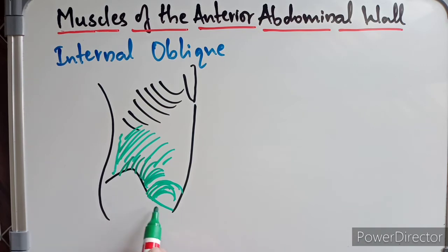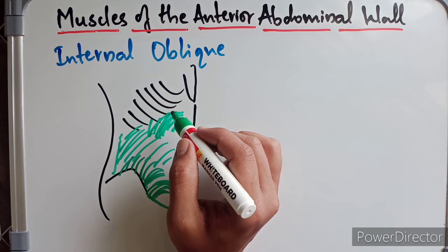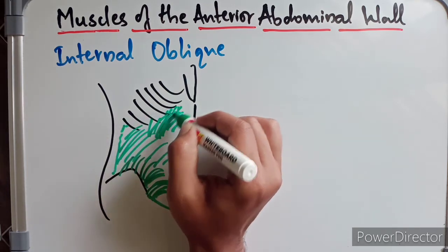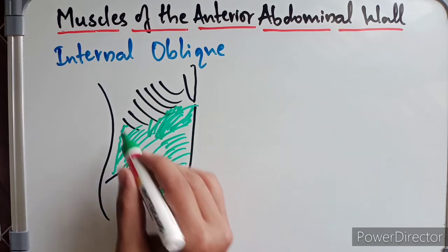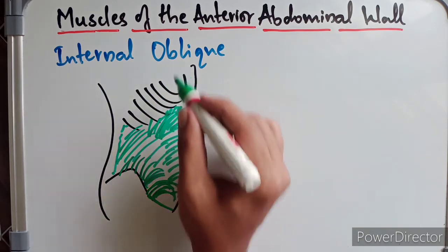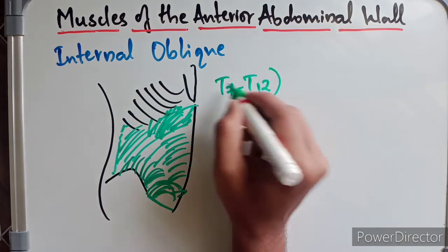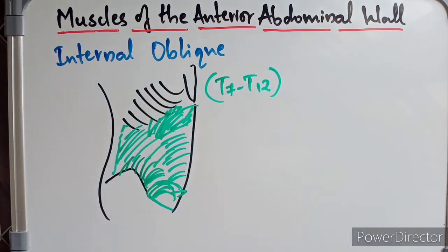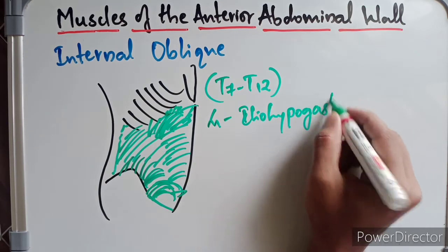The internal oblique fibers originating from the lateral two-thirds of the inguinal ligament are inserted into the seventh, eighth, and ninth costal cartilages. The posterior most fibers are inserted into the lower third and fourth ribs. The remaining fibers are inserted into the linea alba. The nerve supply is T7 to T12, the anterior primary rami of the lower six thoracic nerves, and also L1 — the iliohypogastric and ilioinguinal nerves.